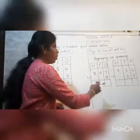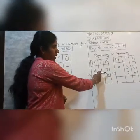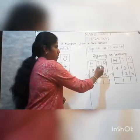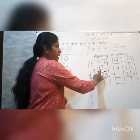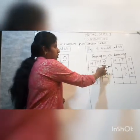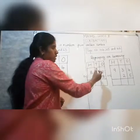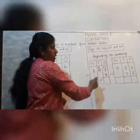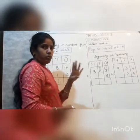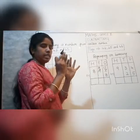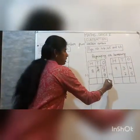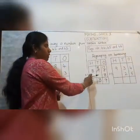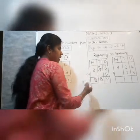We cannot take away 8 from 7, so we borrow 1 ten from the tens place. In the tens place we have 9 tens, so we take away 1 ten, making it 8 tens. We bring that 1 ten to the ones place, so 1 ten and 7 ones becomes 17. Now we subtract 8 from 17, which gives us 9. Since we borrowed 1 from the tens, we now have 8 tens to write down. There are no numbers to subtract in the hundreds, so we write the same number there.